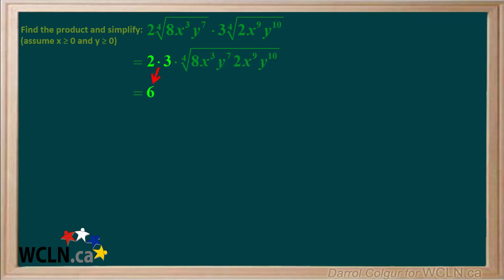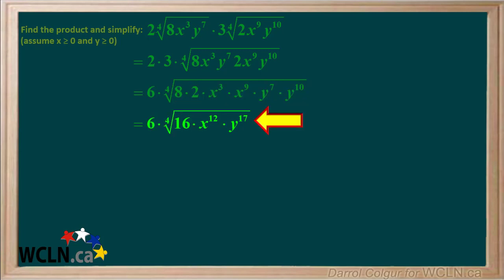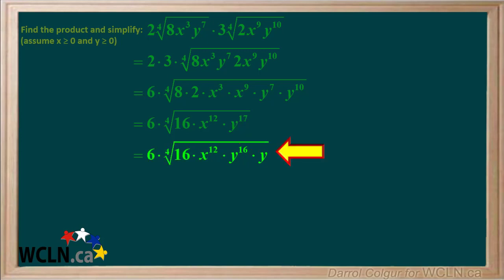2 times 3 equals 6. We'll rearrange the values under the radical so the numbers are together, the x's are together, and the y's are together. 8 times 2 is 16. x cubed times x to the 9th is x to the 12th. And y to the 7th times y to the 10th is y to the 17th. Notice the fourth root of 16 and the fourth root of x to the 12th are perfect fourth roots, but the fourth root of y to the 17th is not. However, y to the 17th can be factored to y to the 16th times y, and the fourth root of y to the 16th is a perfect fourth root.